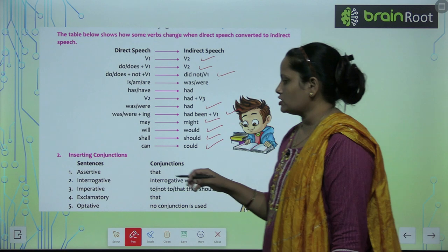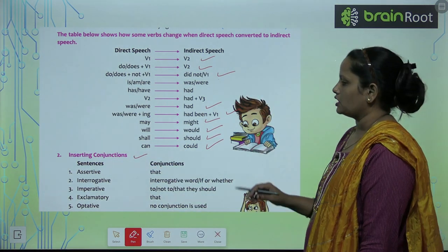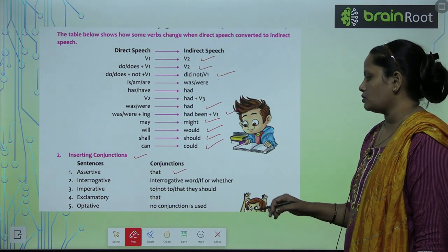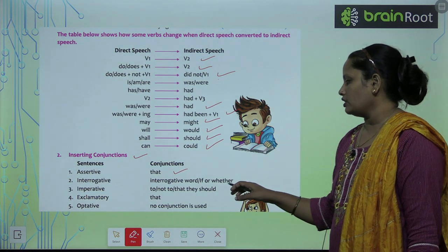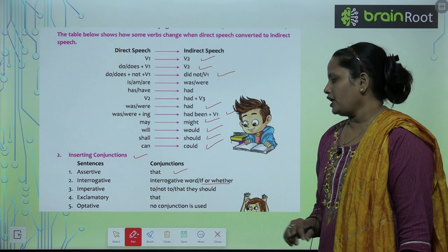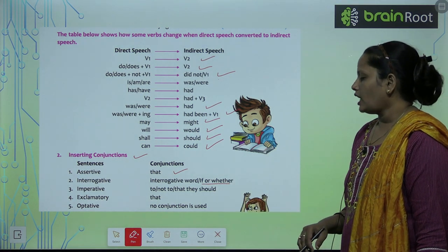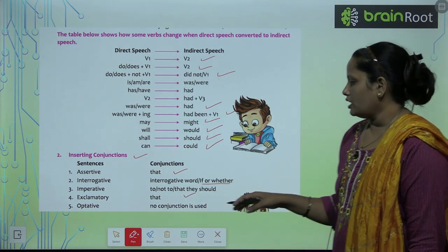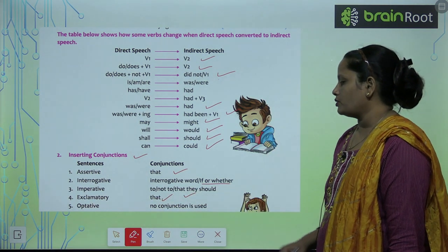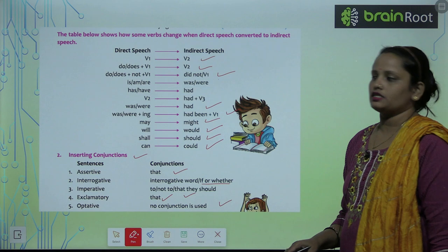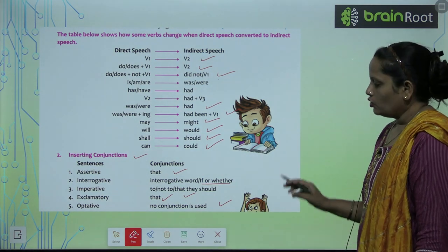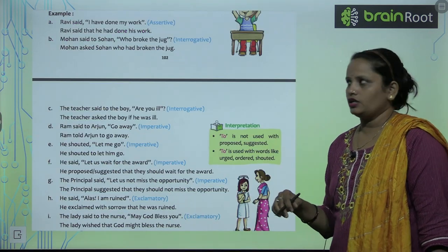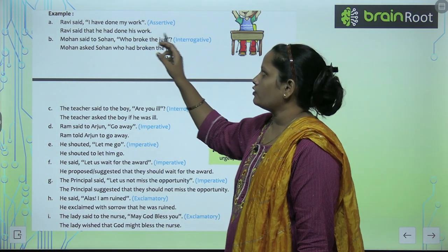Inserting conjunctions — conjunctions ko kaise insert karte hain sentences mein: Assertive sentences mein 'that' use kiya jata hai. Interrogative sentences mein interrogative word use kiya jata hai, ya phir 'if' or 'whether' use kiya jata hai. Imperative sentences mein 'to,' 'not to,' 'that they should' use kiye jate hain. Sorry — exclamatory mein 'that' use kiya jata hai. Optative sentences mein no conjunction is used.